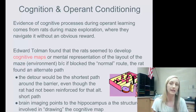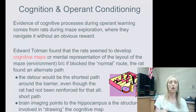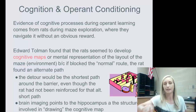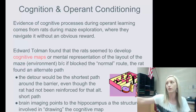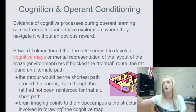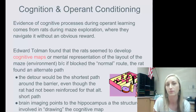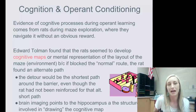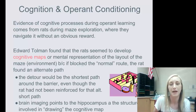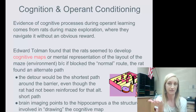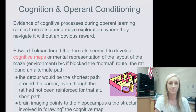You also have a cognitive map of your home. If you closed your eyes right now and visualized walking in your front door, walking to the kitchen to get a snack, then to the living room, then upstairs to your bedroom — you could do that because you have a mental map of the layout of your environment.